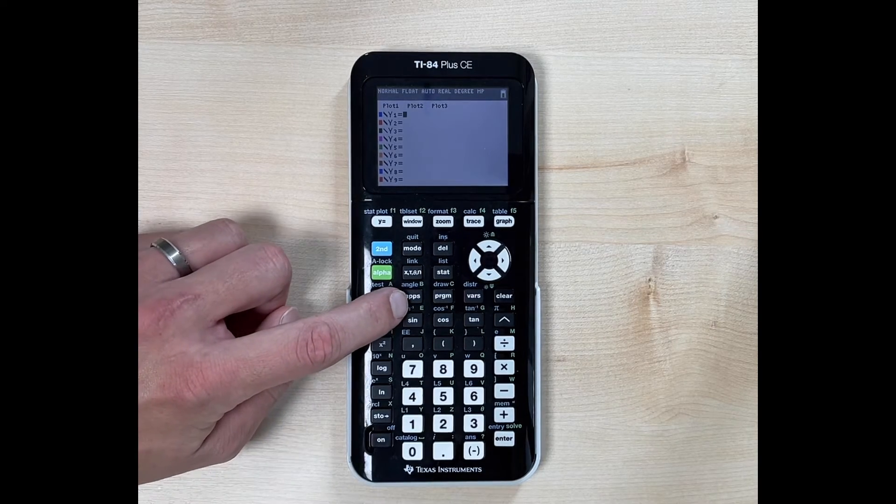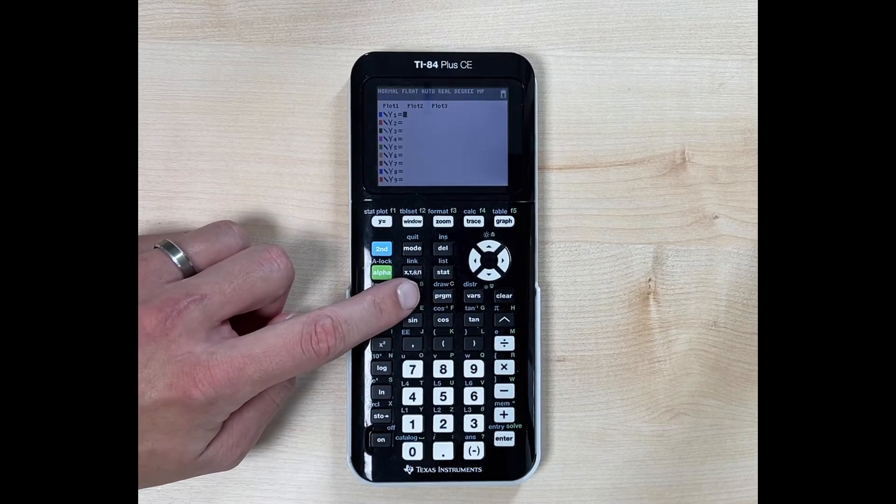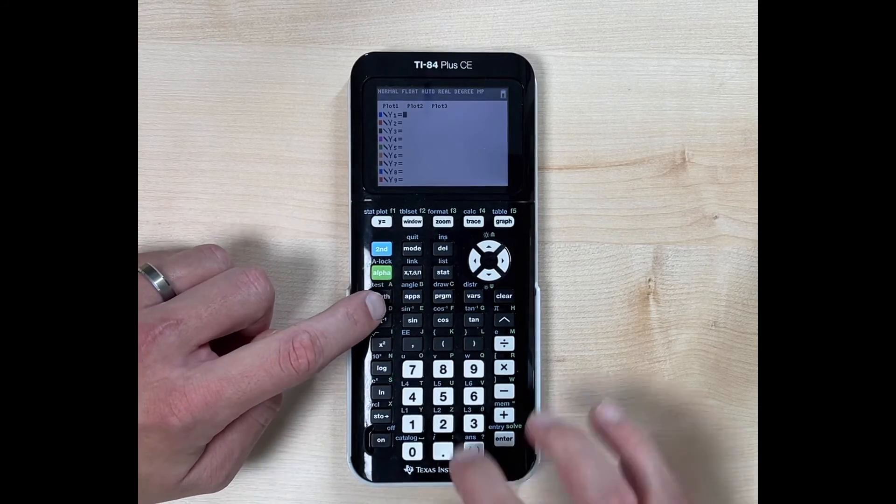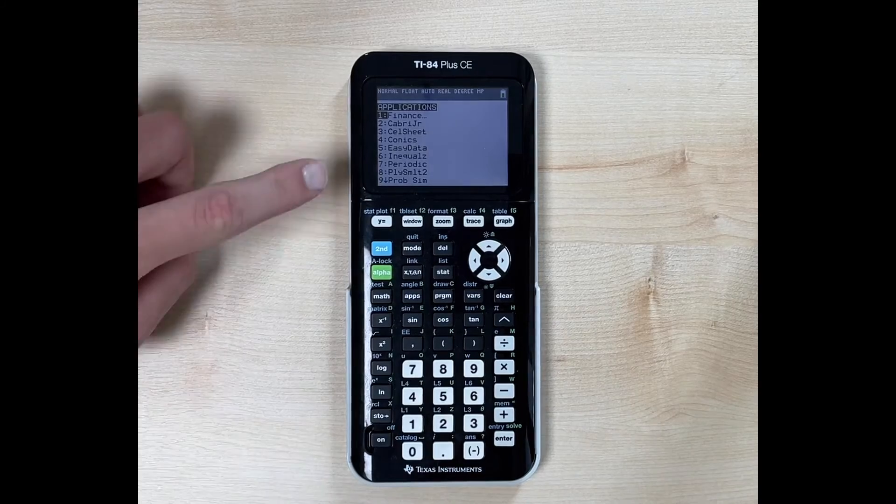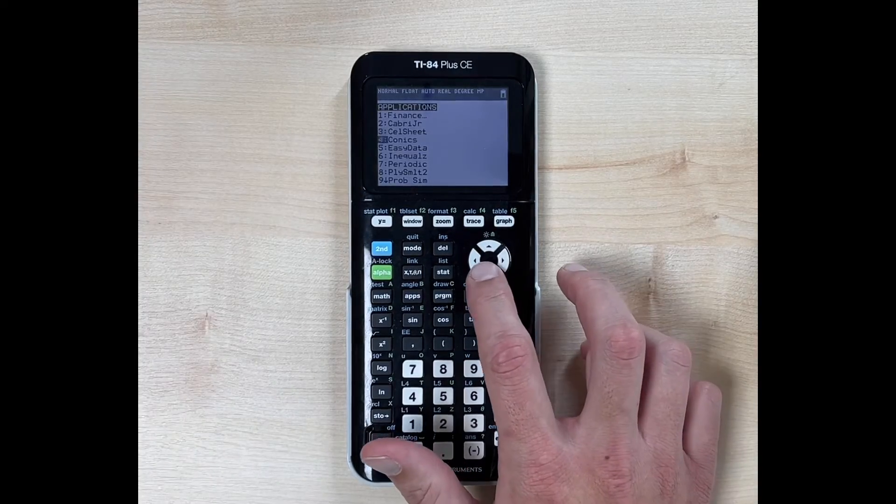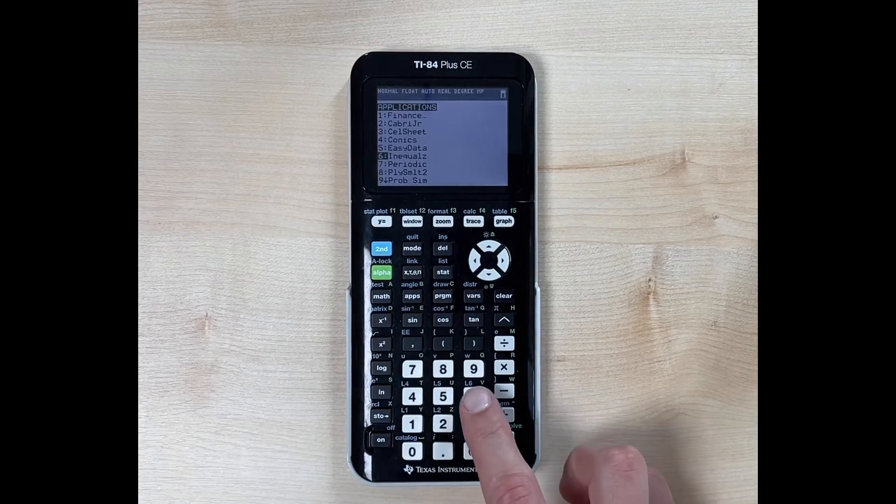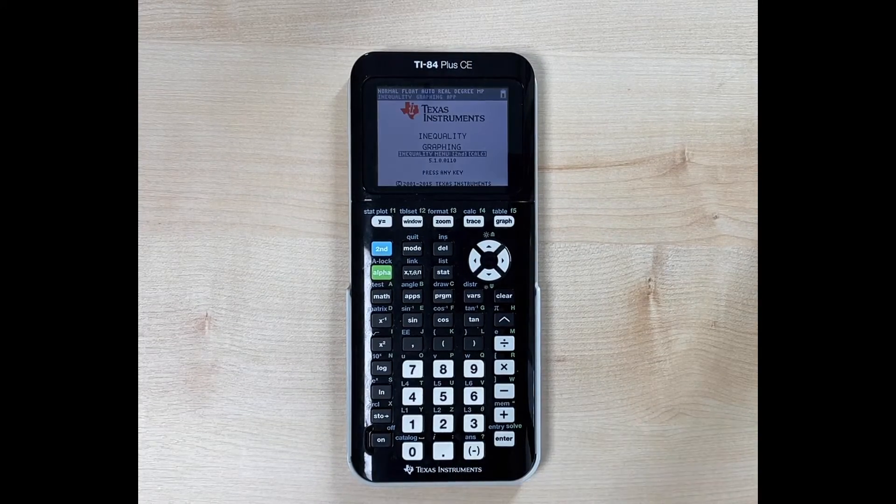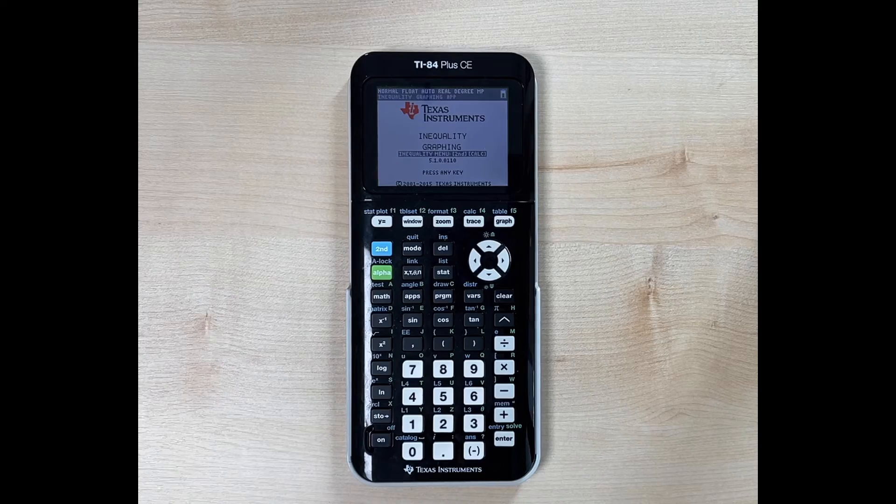You're going to hit the button that says apps. Apps is located right here next to the math, in between math and program. We're going to hit apps. And we want the option number six here, any equals. So you can go down to number six and hit enter, or you can just hit the number six.